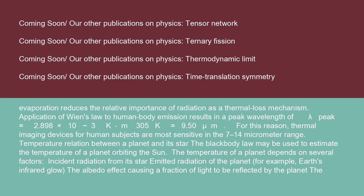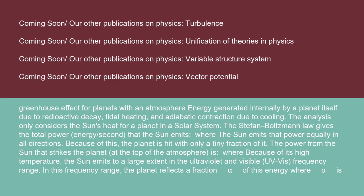Temperature relation between a planet and its star: the blackbody law may be used to estimate the temperature of a planet orbiting the Sun. The temperature of a planet depends on several factors: incident radiation from its star; emitted radiation of the planet (e.g., Earth's infrared glow); the albedo effect causing a fraction of light to be reflected; the greenhouse effect for planets with an atmosphere; and energy generated internally by a planet due to radioactive decay, tidal heating, and adiabatic contraction due to cooling.